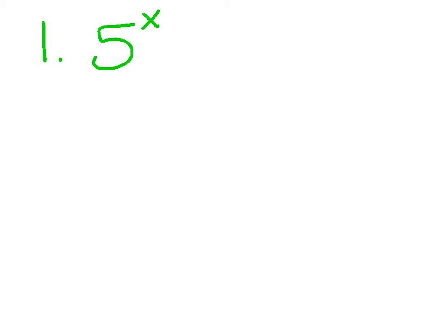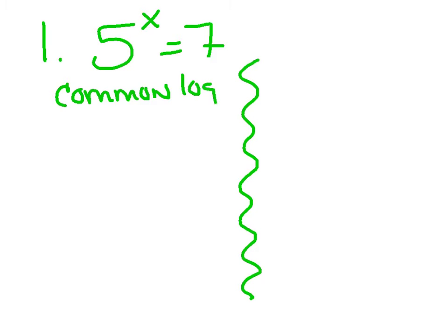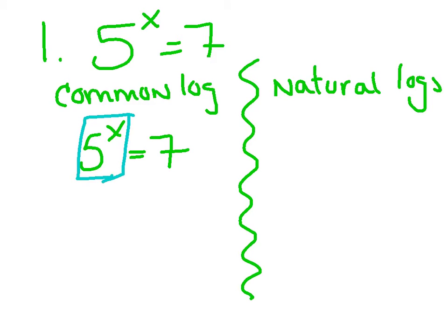Let me go back to that example, that 5 to the x equals 7. I'm actually going to split it up and solve it twice, one using common logs and one using natural logs. So 5 to the x equals 7. Step one said isolate the exponential expression. Well, the base and exponent is by itself. There's nothing in front of it being added, multiplied, subtracted. So step one is done.